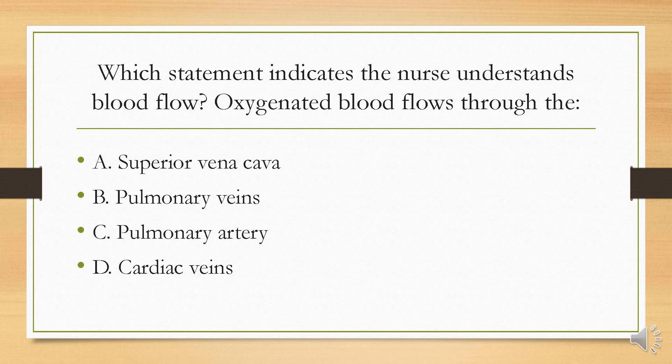First question: which statement indicates the nurse understands blood flow? Oxygenated blood flows through the A, superior vena cava; B, pulmonary veins; C, pulmonary artery; or D, cardiac veins?